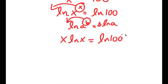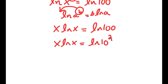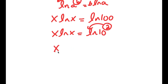Now ln 100 is the same thing as ln of 10 squared. So I get x times ln x is equal to ln(10 squared). Applying the power rule again, I can move 2 to the front: x times ln x is equal to 2 times ln 10.